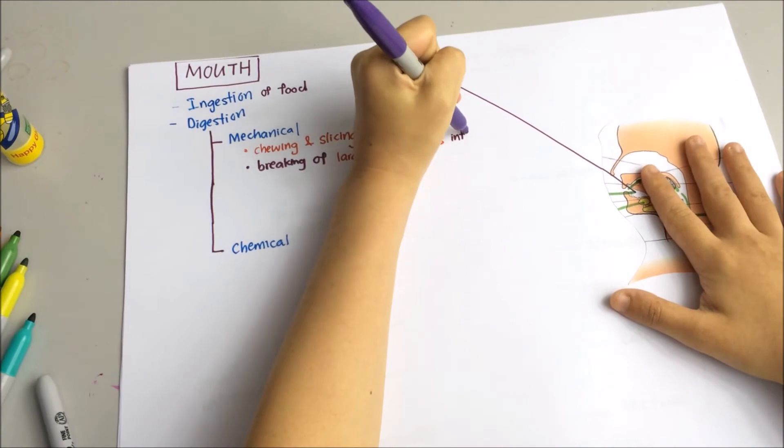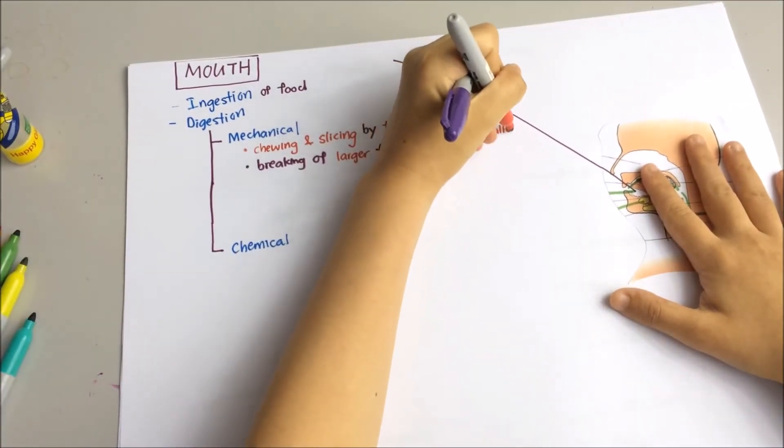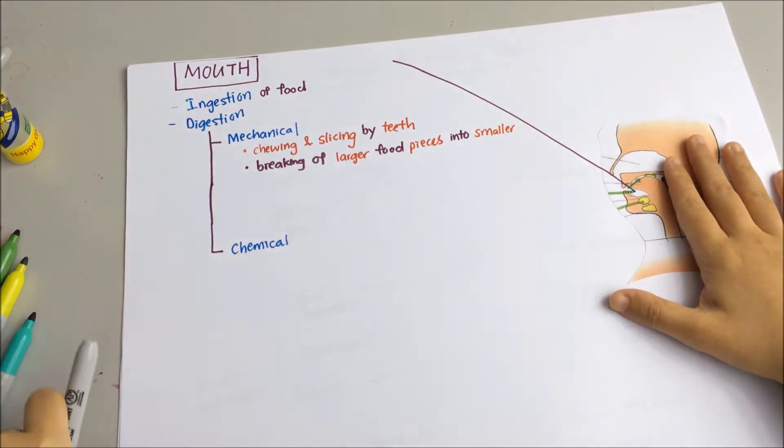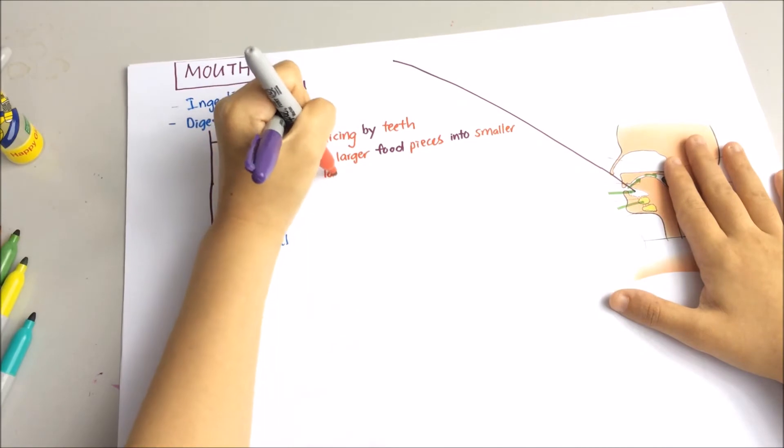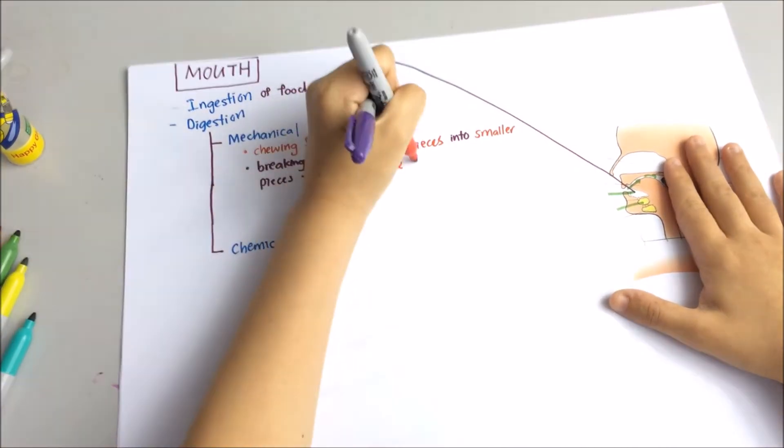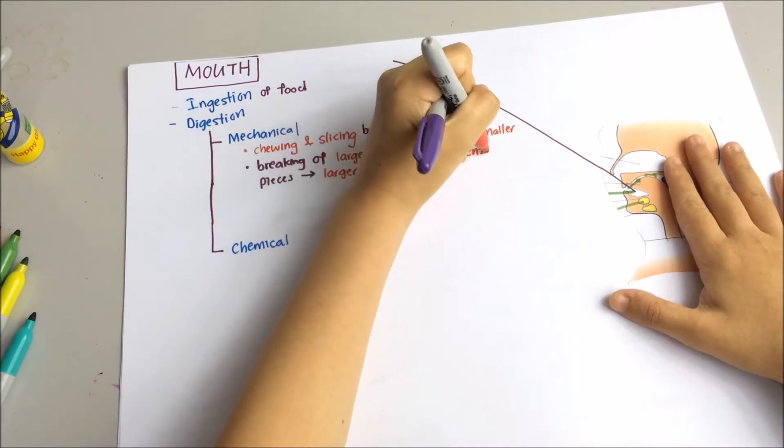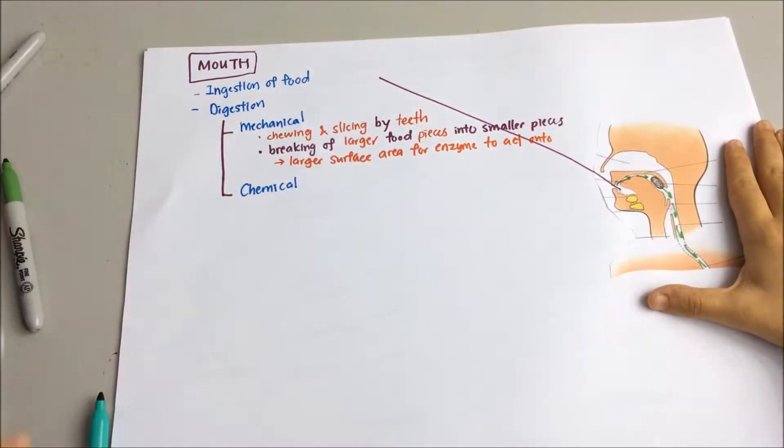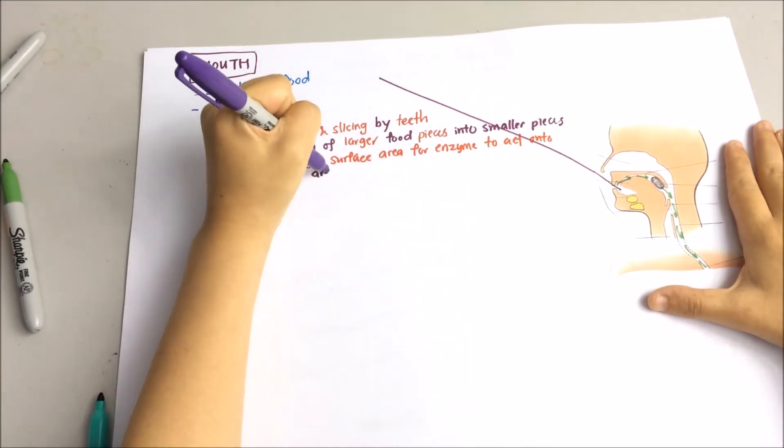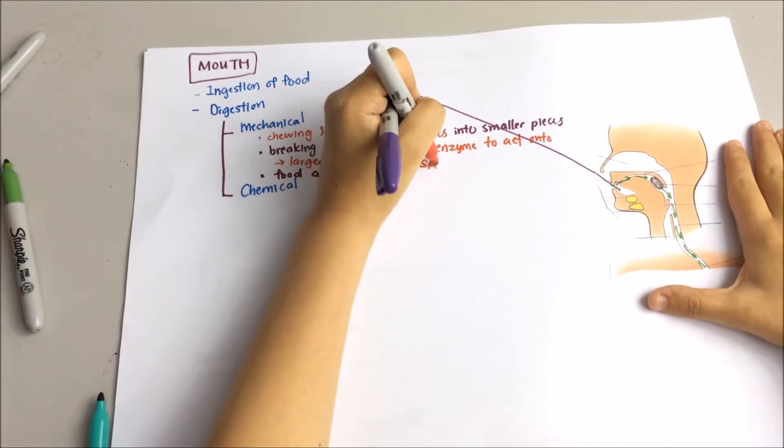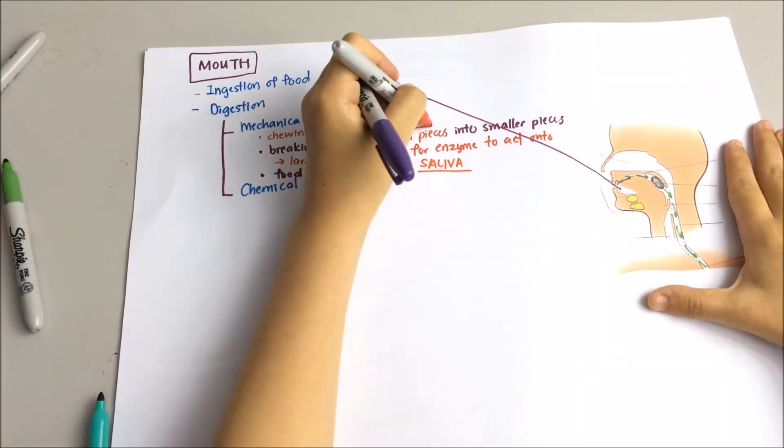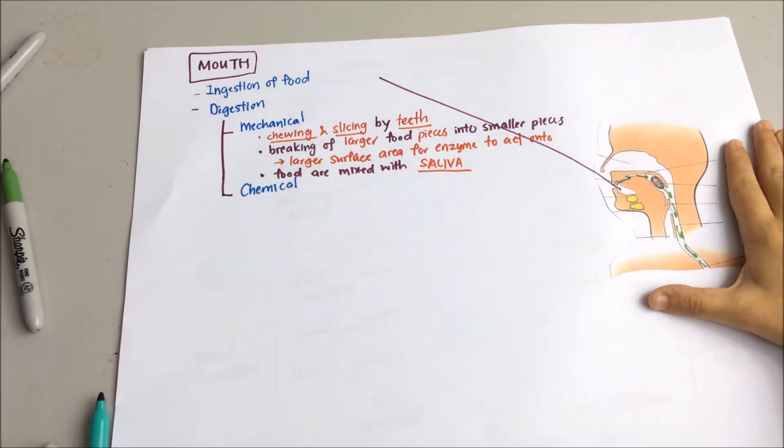Remember, the whole purpose of the digestive system is to break down the food into smaller and smaller pieces so that the nutrients contained in the food can be released and used by your body. Chewing also mixes the food with saliva, which is secreted by the salivary glands. Saliva contains mucus which lubricates and moistens the food so that the food can be easily swallowed. So remember that mechanical digestion involves chewing and slicing by the teeth and also mixing with saliva.